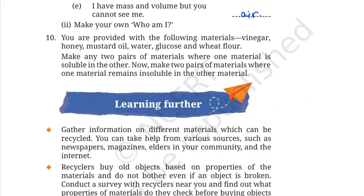Question number ten: you are provided with materials — vinegar, honey, mustard oil, water, glucose, and wheat flour. Make two pairs where one material is soluble in another, and two pairs where one material is insoluble. Vinegar and water are a soluble pair. Glucose and water are also soluble — glucose dissolves in water.